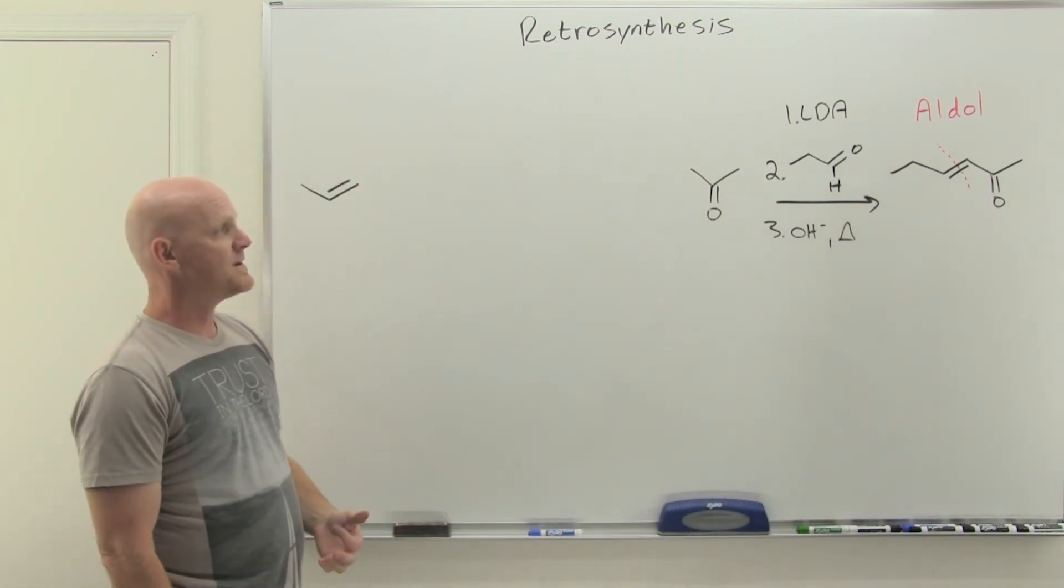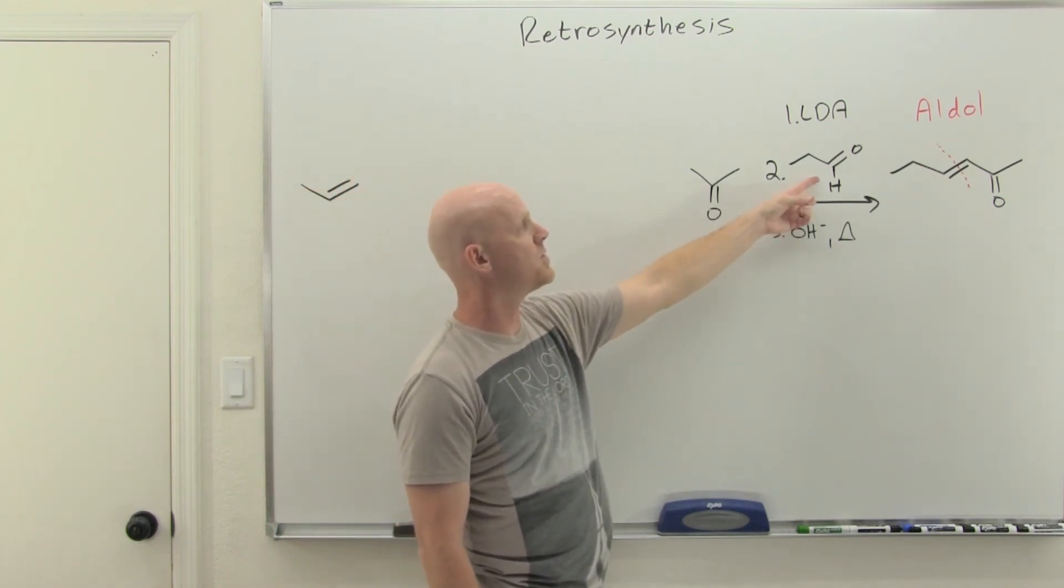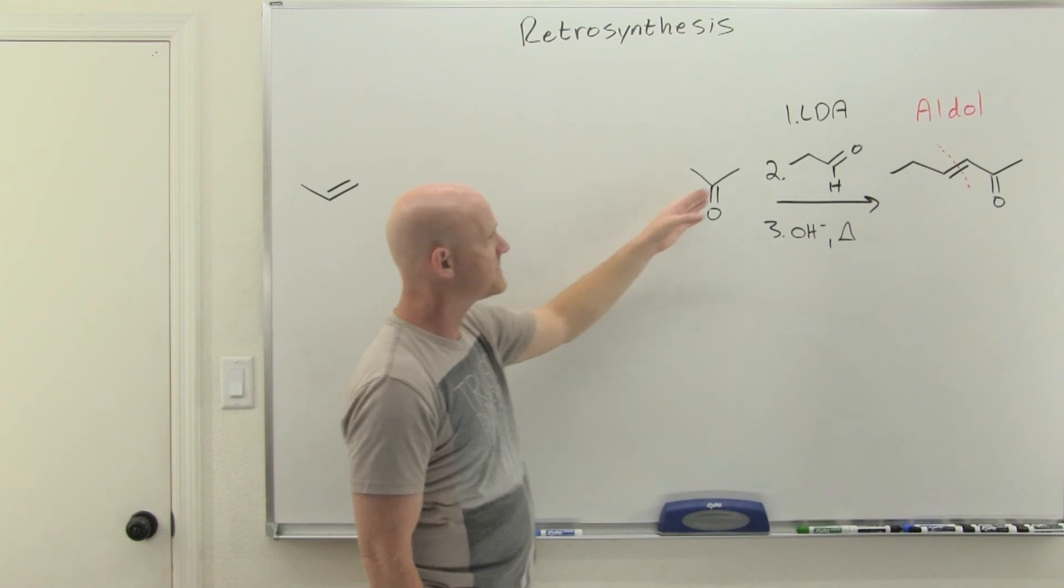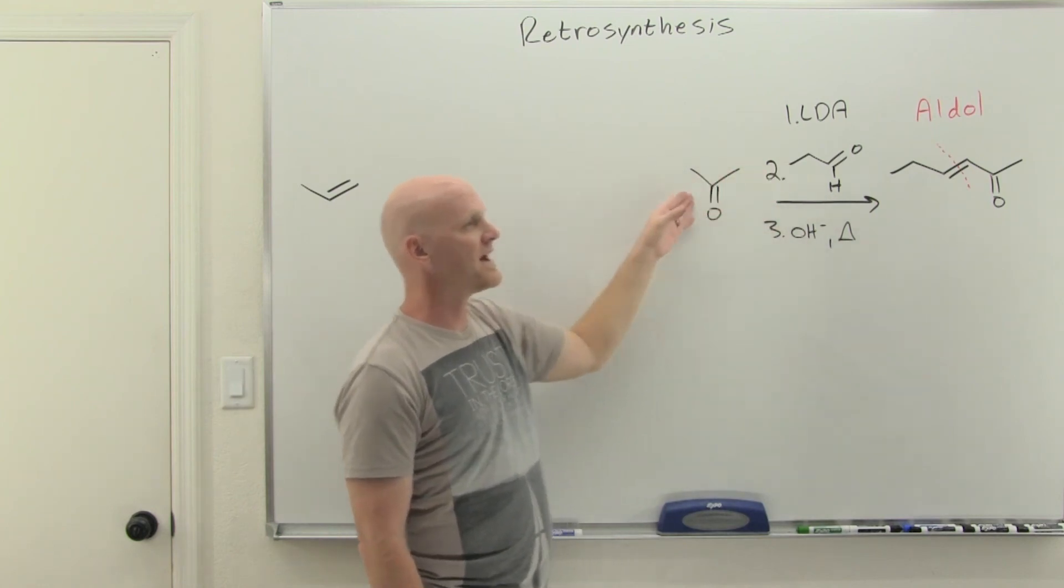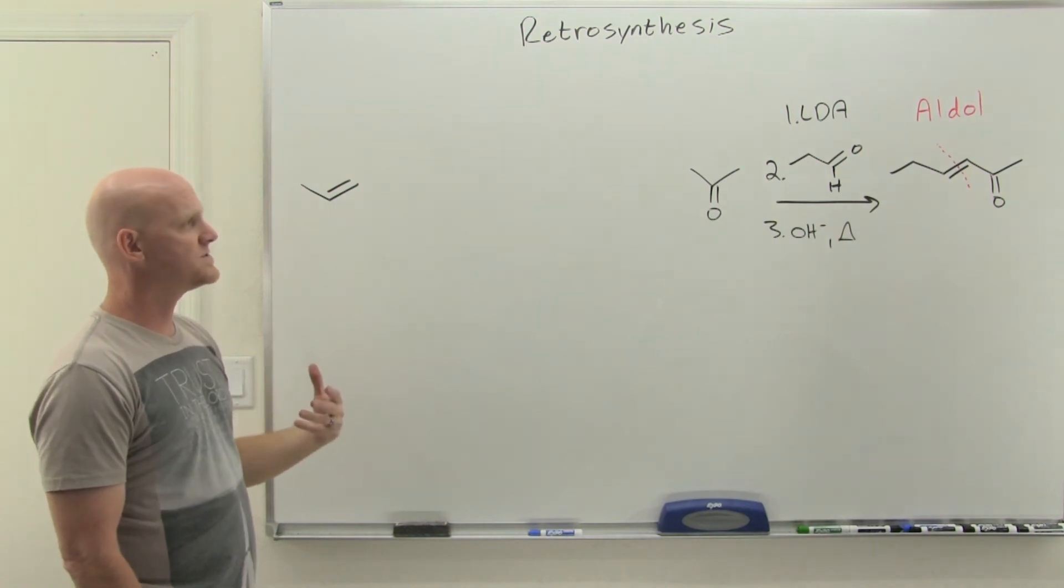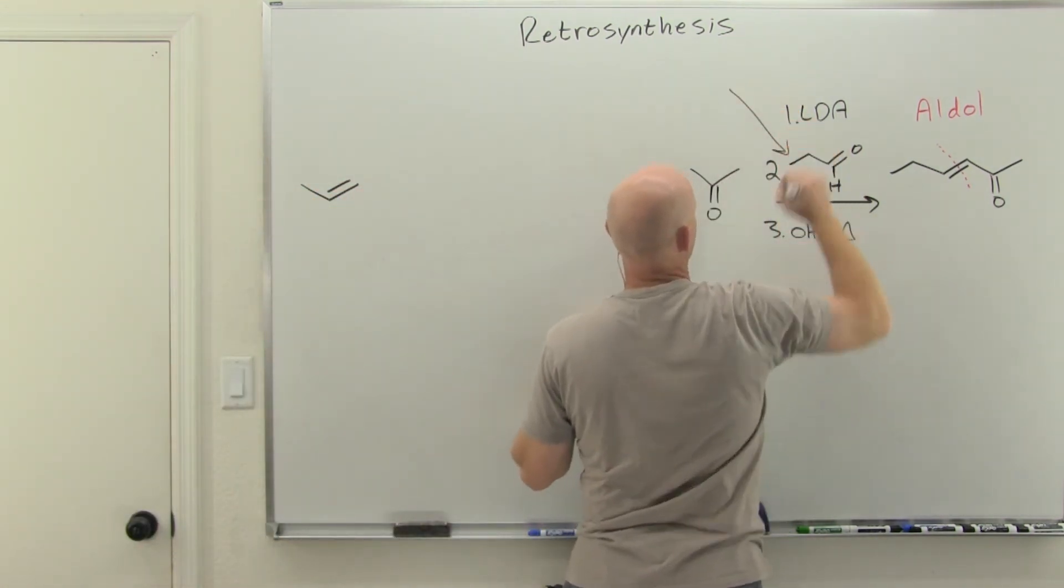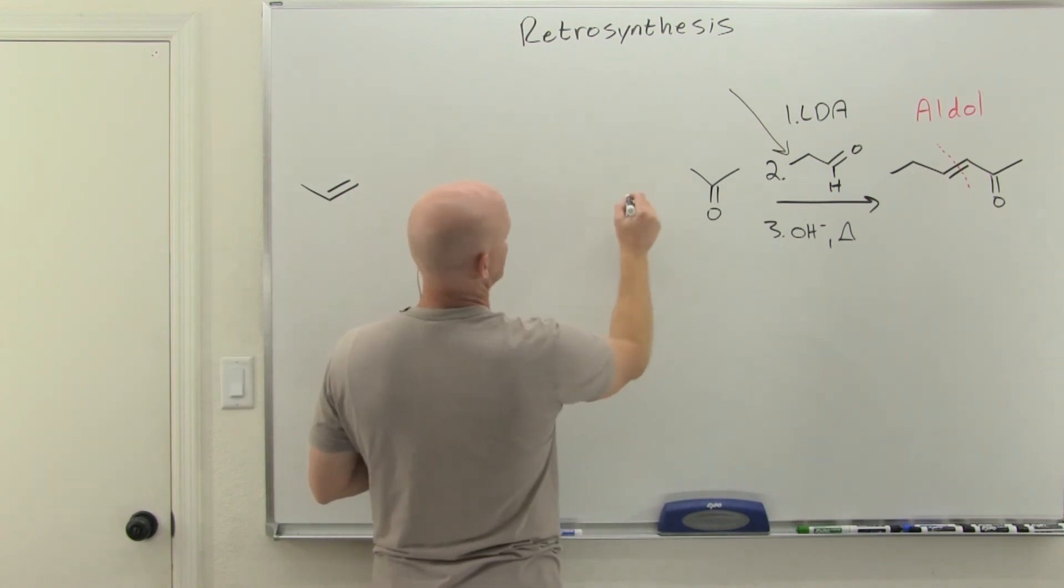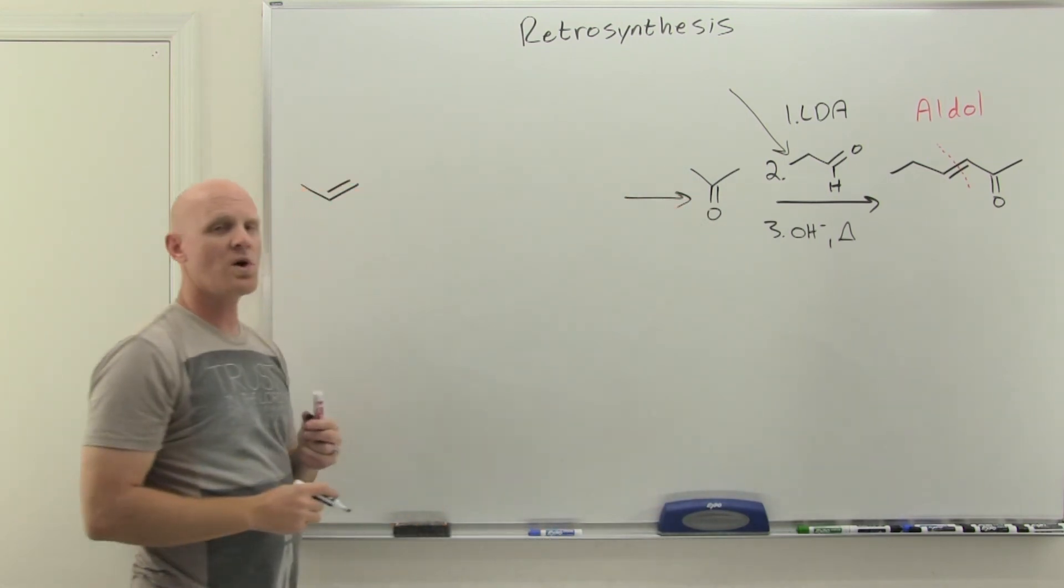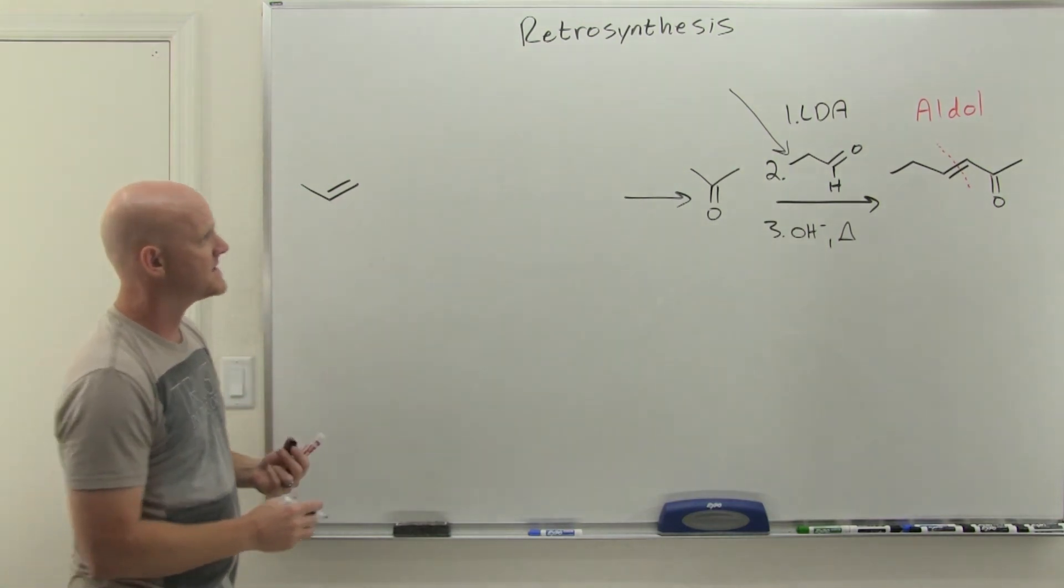We see we've really got to make two things: we've got to make our ketone here, acetone, and then we've got to make our propanal here as well. All our carbons have to be accounted for as coming from propene. We've really got two syntheses: one feeding into our aldehyde and one feeding into our ketone, both originating from propene.